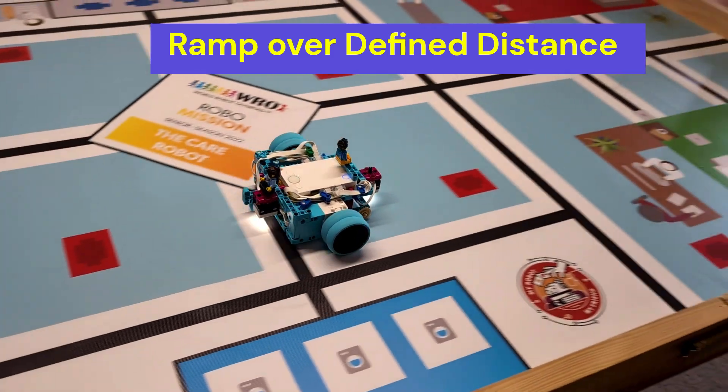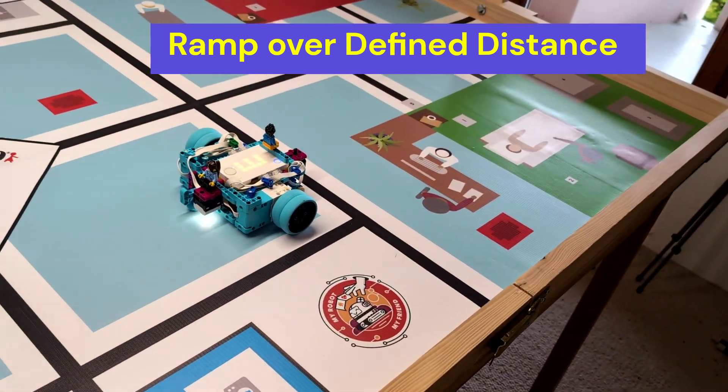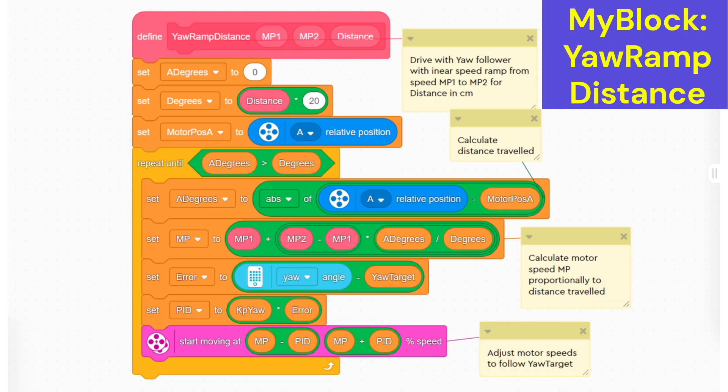The next my block makes it possible to ramp over a defined distance, which is more useful. Here the ramp is combined with a yaw follower. The yaw target is set before the block starts. It is compared to the measured pure angle to form a proportional controller, very similar to a line follower. We first set the degrees travelled to zero and then calculate the number of degrees to travel from the distance in centimeters.